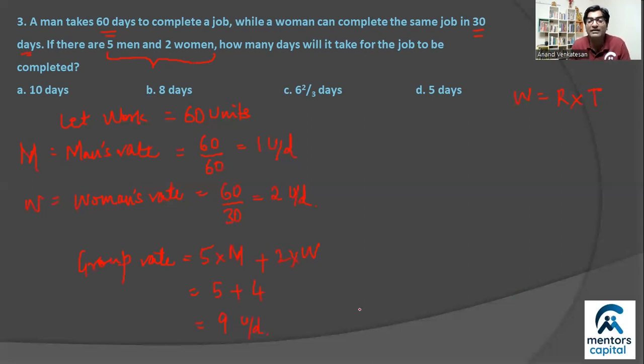So this group, how many days will it take? Well, time taken by the group should be work upon rate, so that should be 60 units of work at the rate of 9 units every day. If we divide, 3 times 20 is 60, so 20 by 3, or 6 and 2 thirds of a day. So 6.67 days, that's option C.